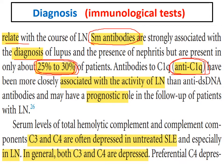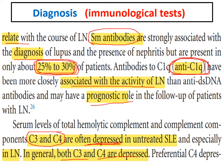Anti-C1q antibodies are associated with lupus nephritis activity and have a prognostic role. Complement components C3 and C4 are often decreased or depressed in patients with lupus — usually both are reduced, reflecting complement consumption by immune complex deposition.